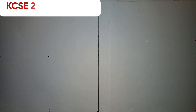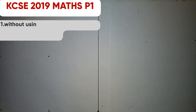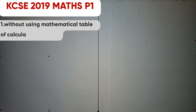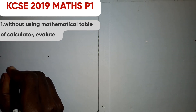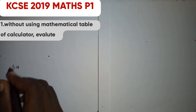Welcome to our channel. Today we are going to solve Mathematics Paper 1, 2019, and we are going to begin with the first five questions. The first question states: without using mathematical tables or a calculator, evaluate 5.4 divided by 0.025 times 3.6.